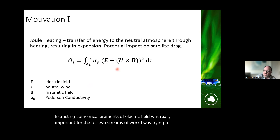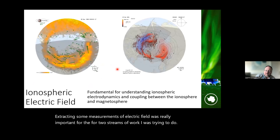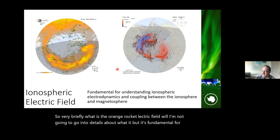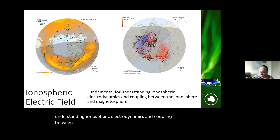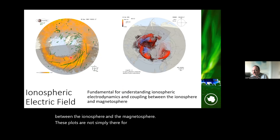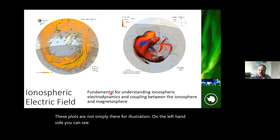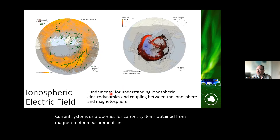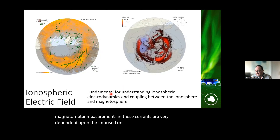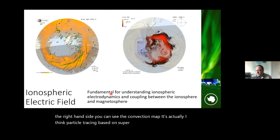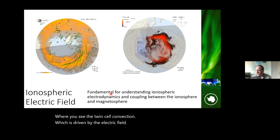The ionospheric electric field is fundamental for understanding ionospheric electrodynamics and coupling between the ionosphere and magnetosphere. Current systems obtained from magnetometer measurements are very dependent on the imposed ionospheric electric field. On the right you can see a convection map with twin-cell convection driven by the electric field in the polar ionosphere.